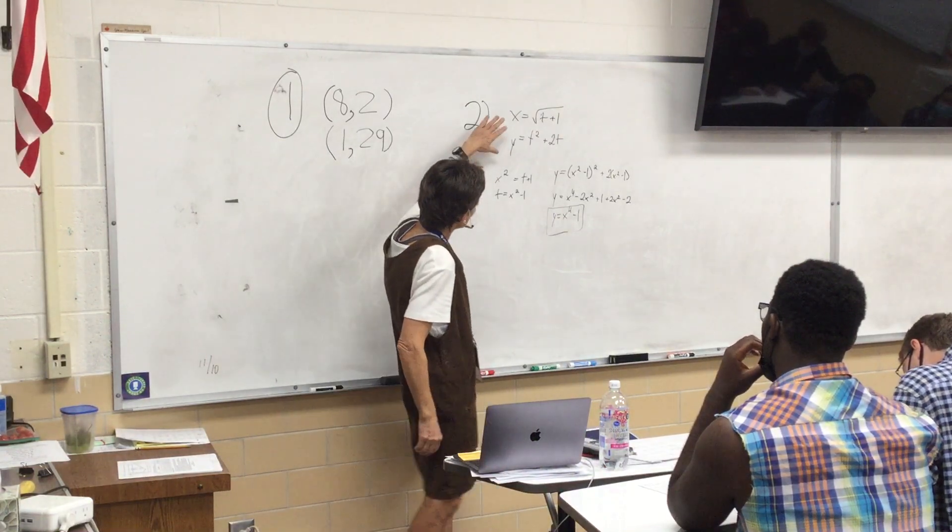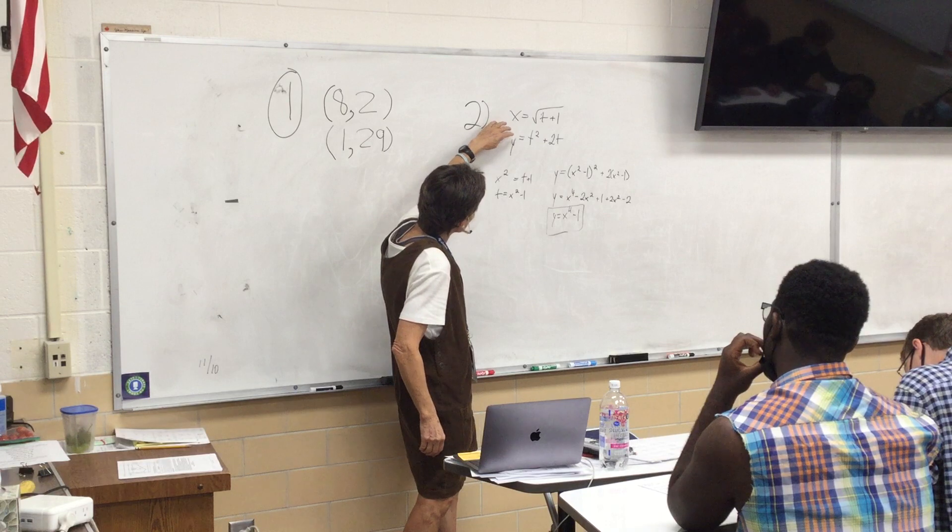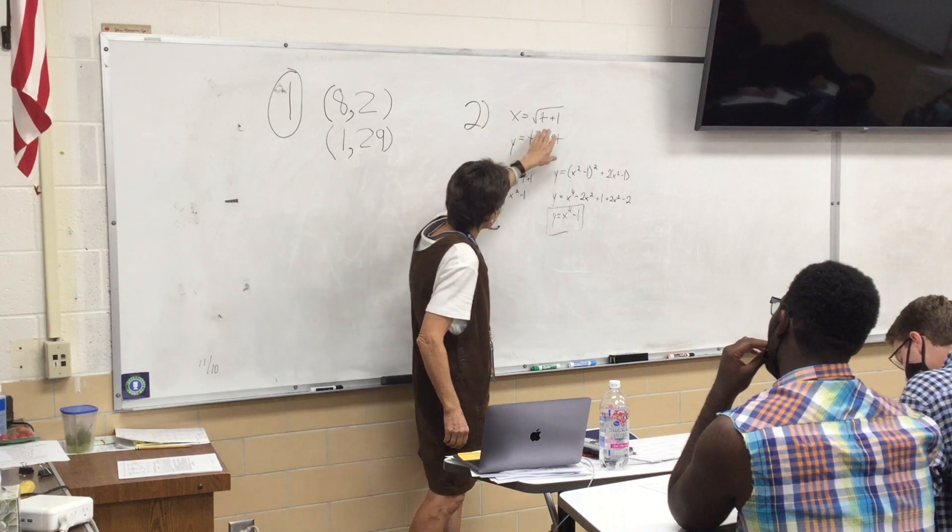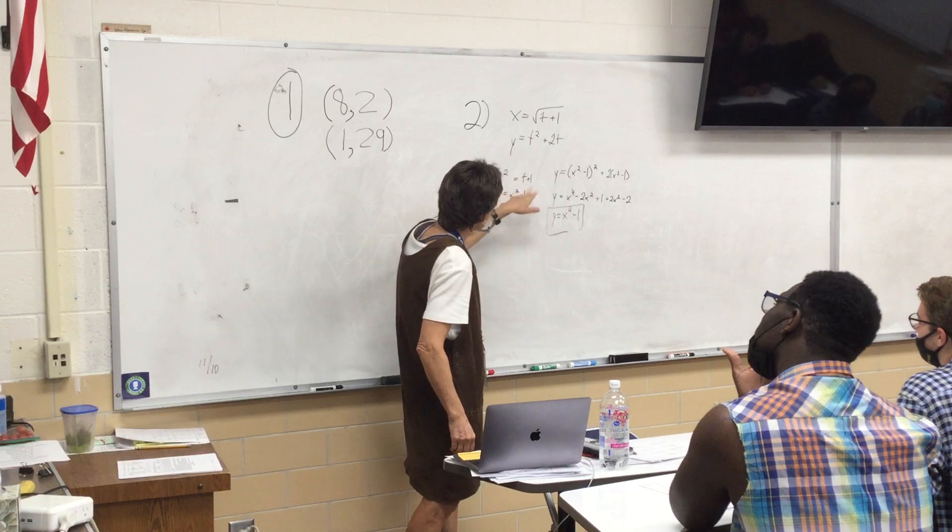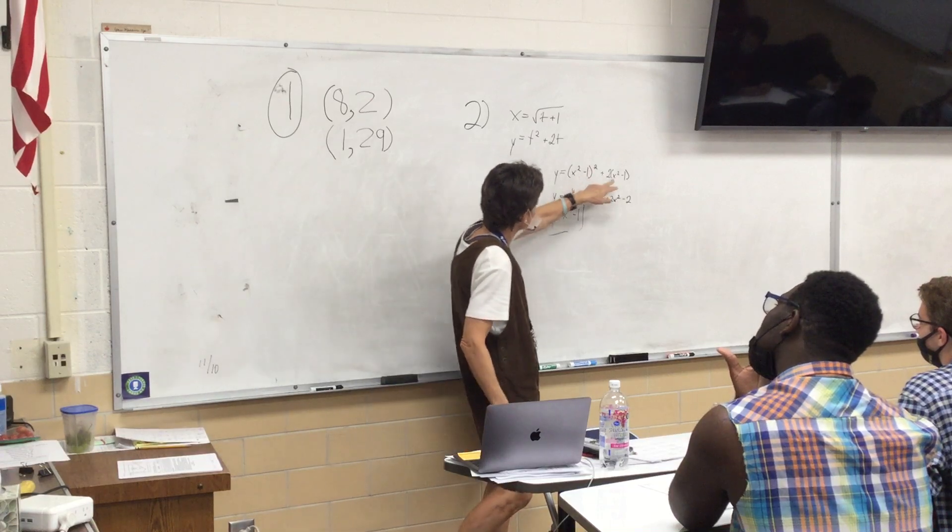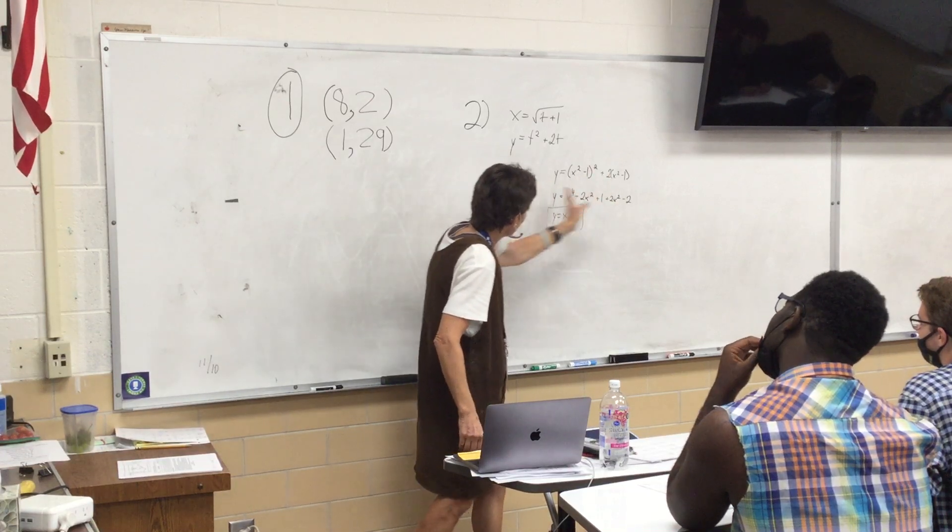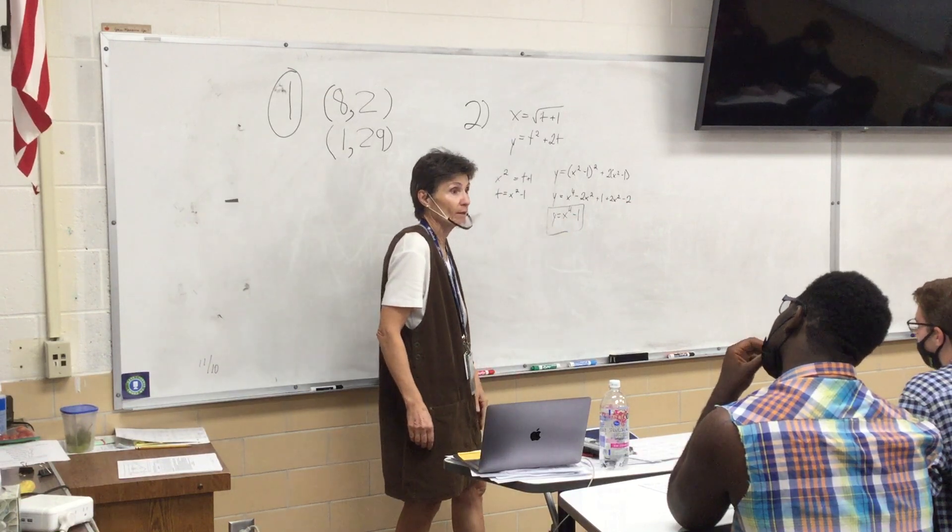I think, can you all see this? Were you okay with what you did, Bernardo? You squared that, then got T by itself, and then substituted that into the other equation, foiled it out, collected like terms, and that's what you came up with, right?